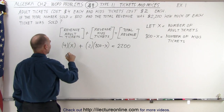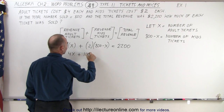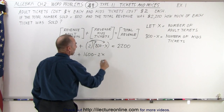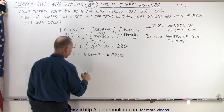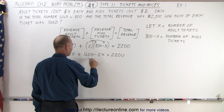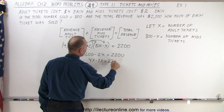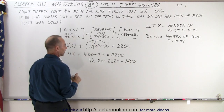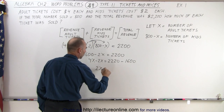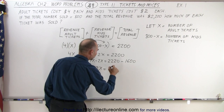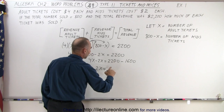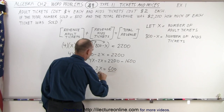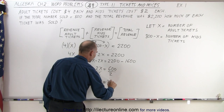First we get rid of the parentheses: 4x plus 1,600 minus 2x equals 2,200, as we distribute the 2 across both 800 and x. Bringing 1,600 to the other side: 4x minus 2x equals 2,200 minus 1,600, which is 600. So 2x equals 600, and dividing both sides by 2, x equals 300.